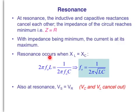Resonance occurs when these two reactances are the same. Equate these two to each other, simplify and rearrange, make this resonant frequency the subject. Then this is the formula, f_o equals 1 over 2π√LC. Also at resonance, supply voltage equals resistor voltage because these two cancel out.